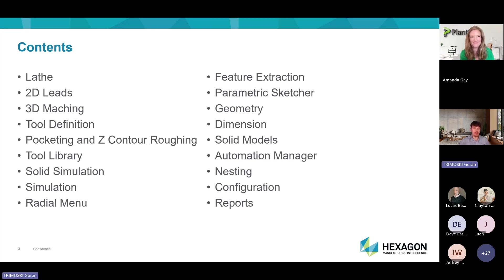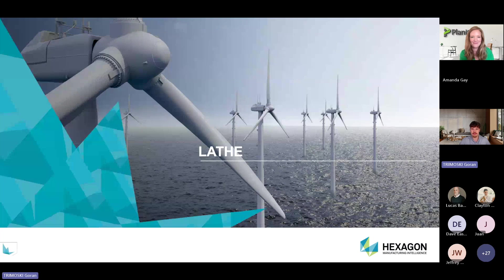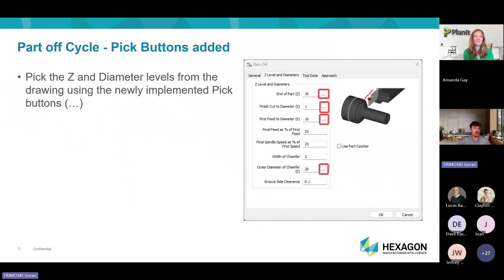We will start with the lathe. The first three slides are going to be fairly similar — we have added pick buttons. What these pick buttons do is instead of manually inputting your depth and parameters, you could just click those buttons and choose on your drawing where you want that depth, diameter, or any value to be. We have that set up in the part-off cycle where you could choose the Z and diameter levels from the drawing.